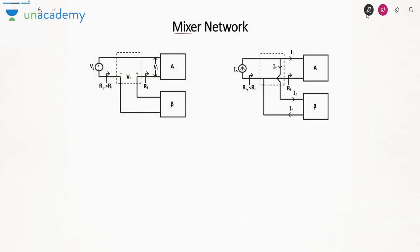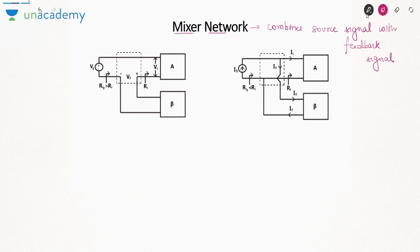Next, the mixer network. The mixer network combines the source signal with the feedback signal — that is why it is called a mixer. When you are adding or subtracting two signals, there are two possibilities: either you are adding or subtracting voltages, or you are adding or subtracting currents.